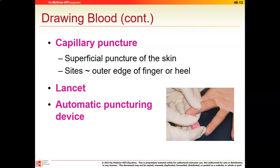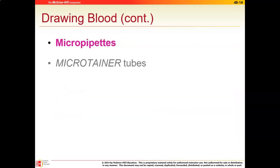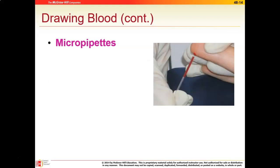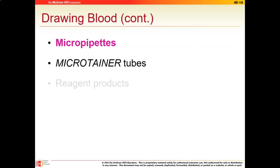There are a number of different lancet devices, and the ones we use are very similar to the ones in the picture. When we're doing a hematocrit test, we will use what are called micropipettes — they have a very small tubule that we actually use to collect blood specimens. Some cholesterol tests can also use micropipettes, as can hematocrits and some other blood chemistry tests. They're also called microtainer tubes.